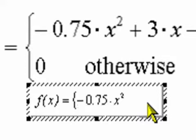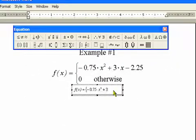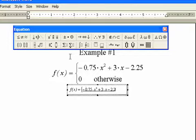So I just clicked right next to the square again, and make sure that you're not in the square any longer. And plus 3, back to our times sign, x minus 2.25.